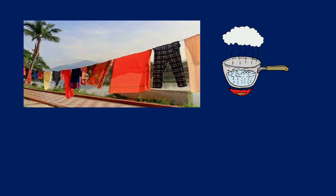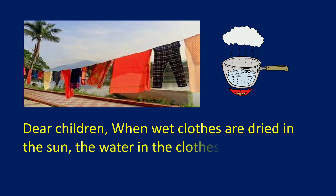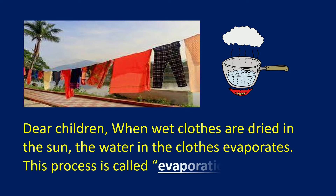What are these? These are cloths — why are they hung like that? After washing, they are hung in order to dry them. Due to wind blow and hot sun rays, water from the cloths will be evaporated and they will dry up. When wet cloths are dried in the sun, the water in the cloths evaporates. This process is called evaporation of water. The water turns into its vapour state — from liquid state to vapour state.